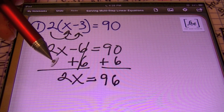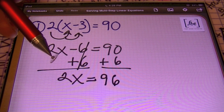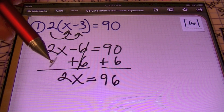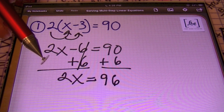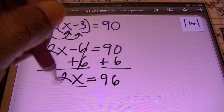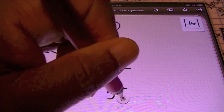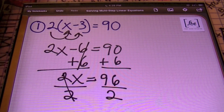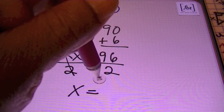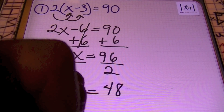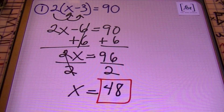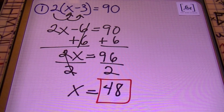Using the division property of equality: anytime I have a coefficient in front of a variable, I divide by that exact same number to get rid of it. I'm dividing both sides by two. So X equals 96 divided by two, which is 48. And that's my answer. I'm going to put a box around my answer — that's how I roll. That was problem number one.